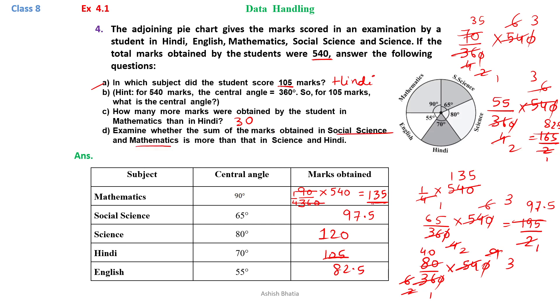Now, examine whether the sum of the marks obtained in Social Science and Mathematics. Total of Social Science and Maths. We have to check 5 and 7, 12, 10 and 3, 13, that is 232.5. Is it more than Science and Hindi? Sum of Science and Hindi is 225. Now, we have to check which one is greater. This is greater. So this is the answer for part C.